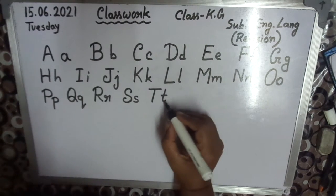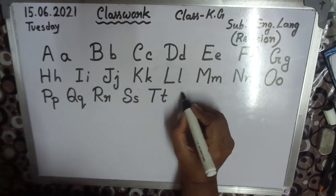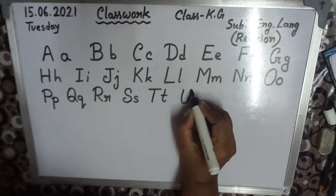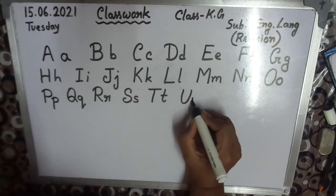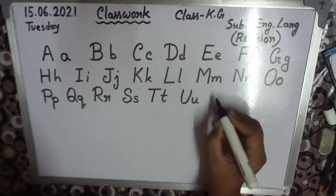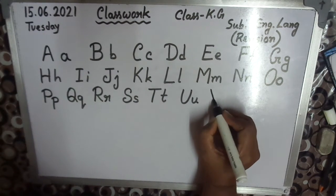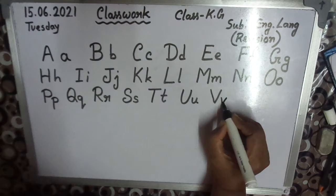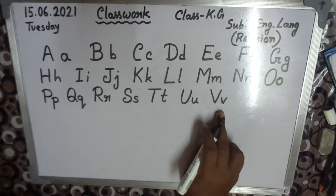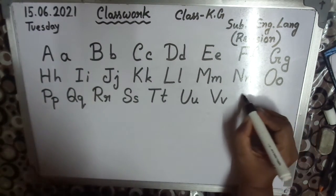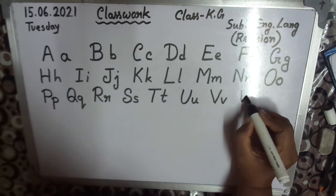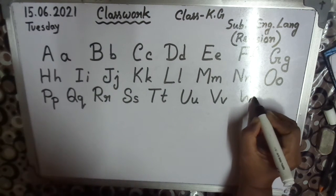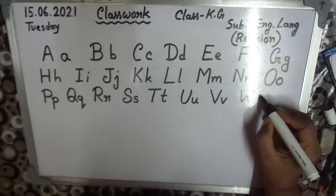See — different small t. Practice. U — capital U, small u. Capital V, small v. W — capital W, small w.